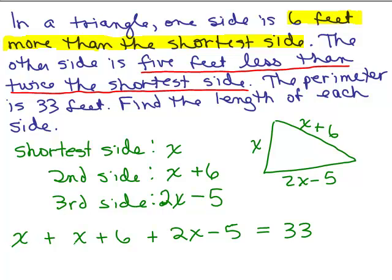Now we have this equation to solve. On the left-hand side, we could add like terms. We have X plus X plus 2X. That's going to give you 4X and I've got 6 minus 5. That's 1. So I have 4X plus 1 equals 33.